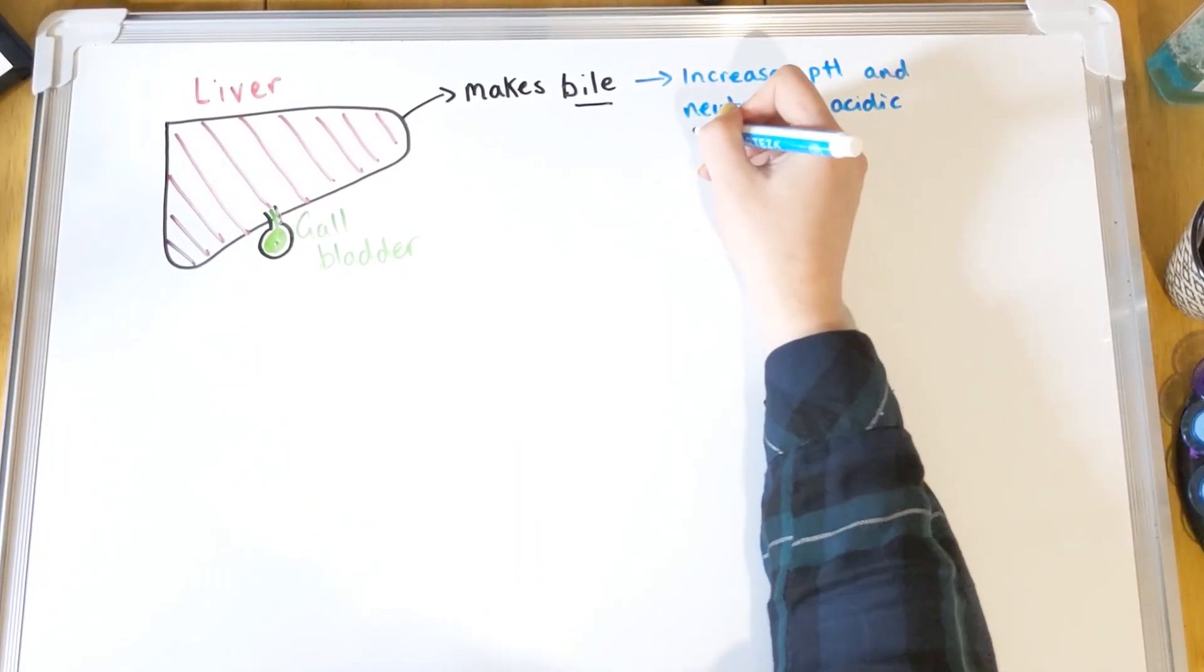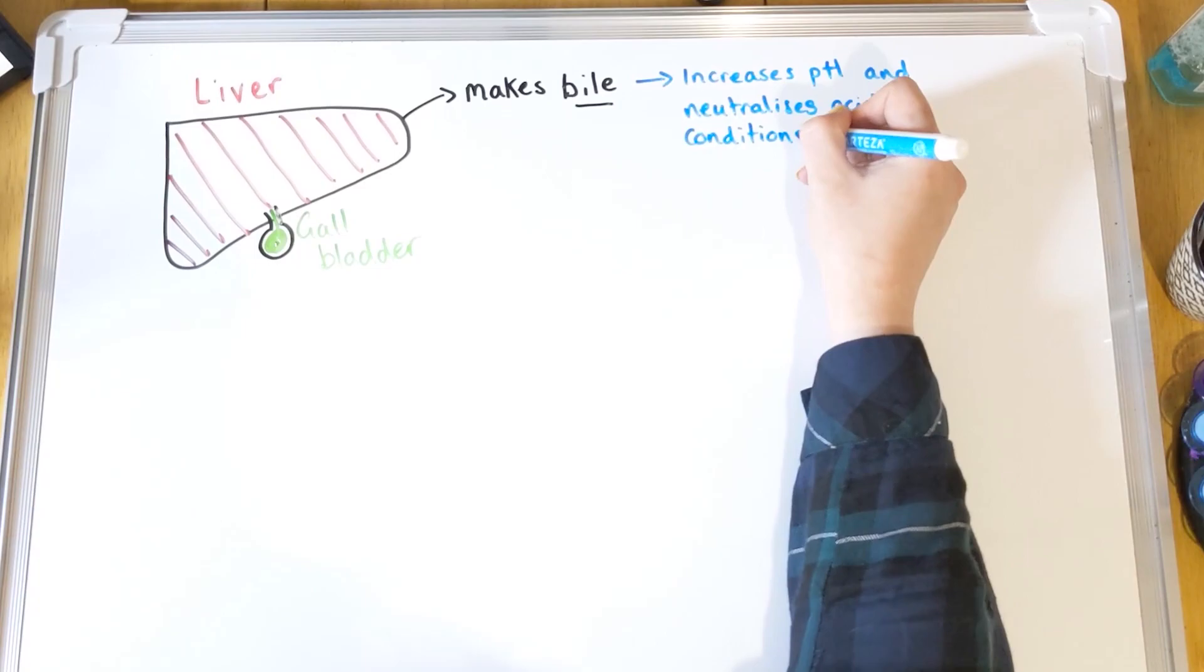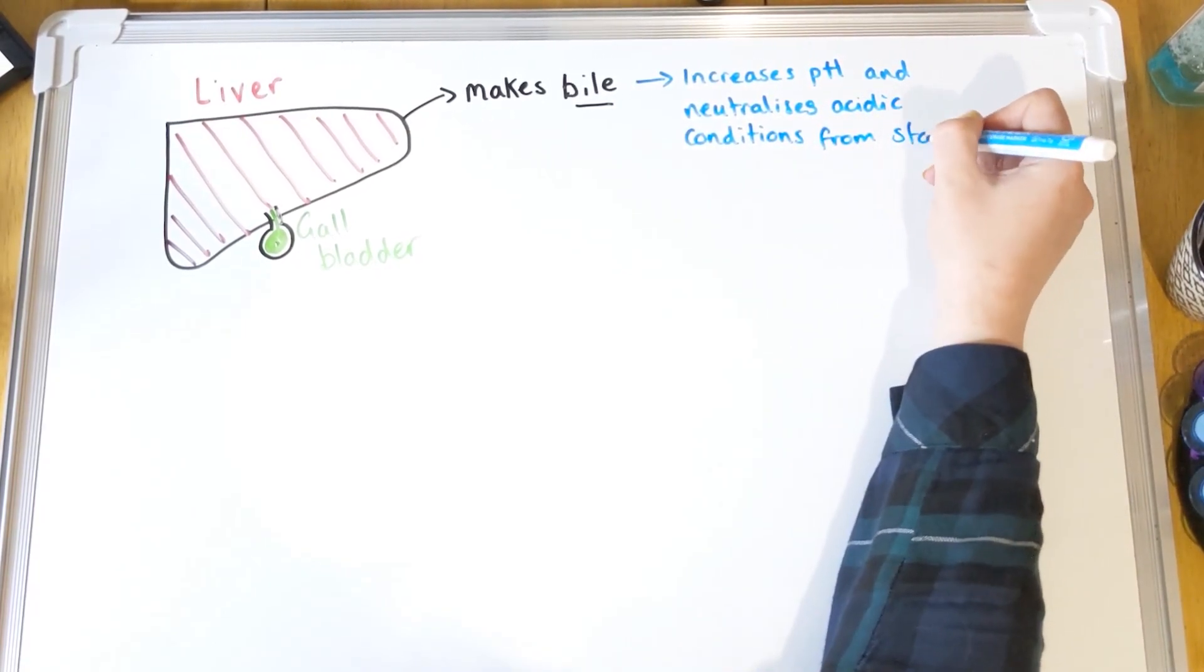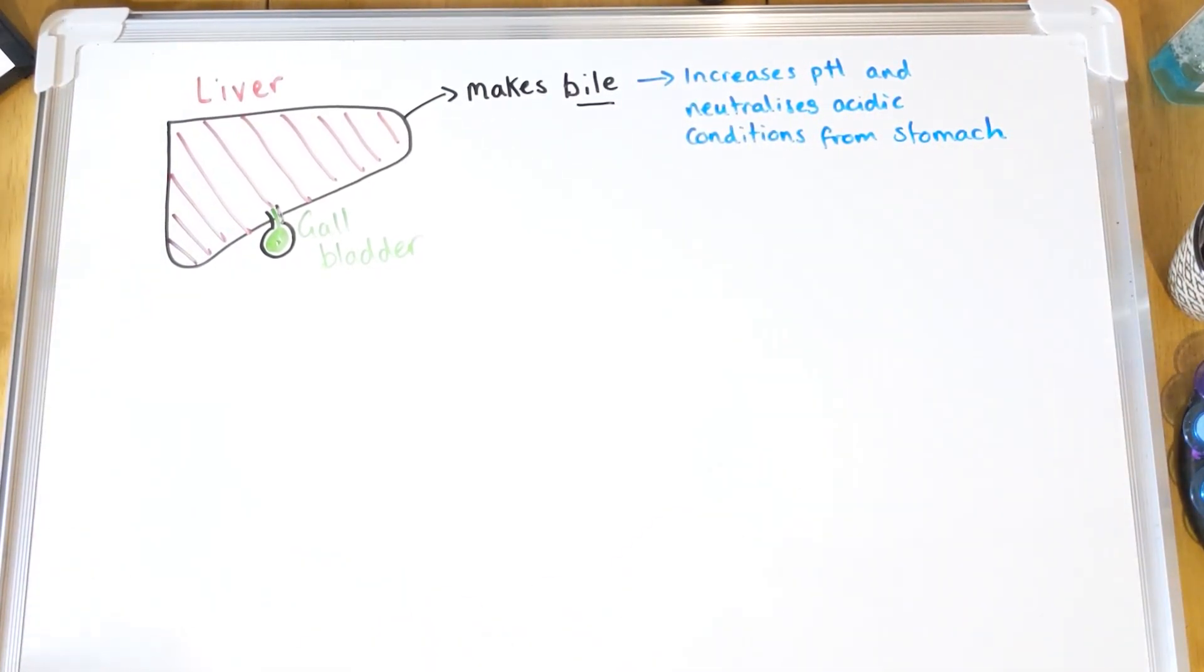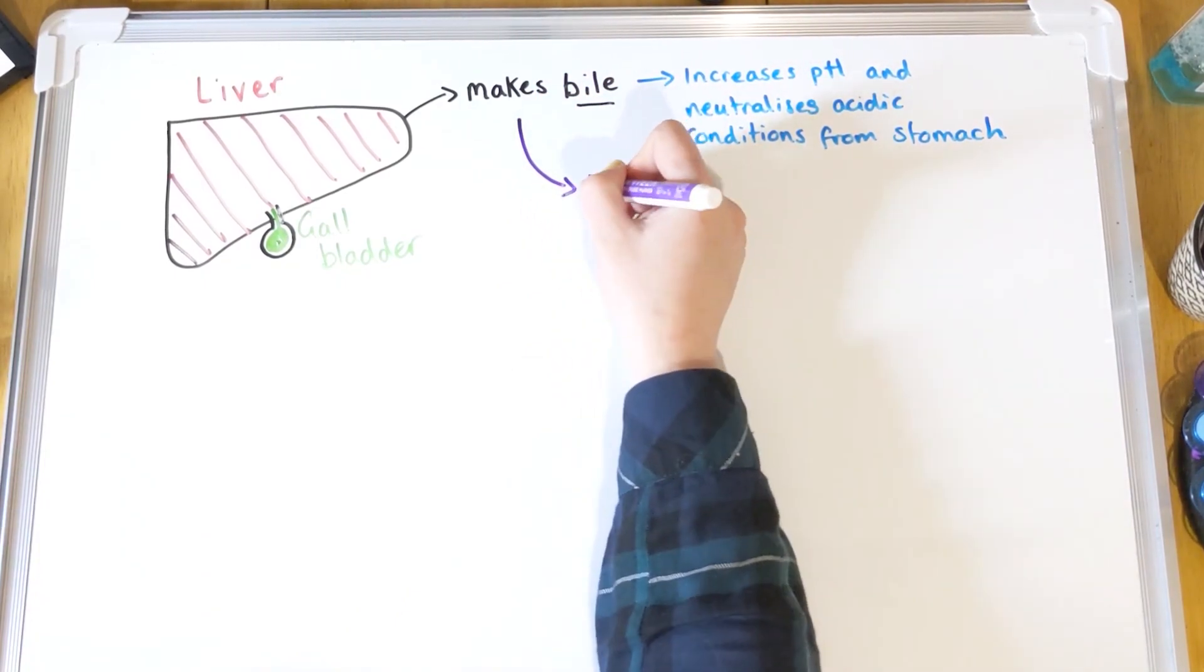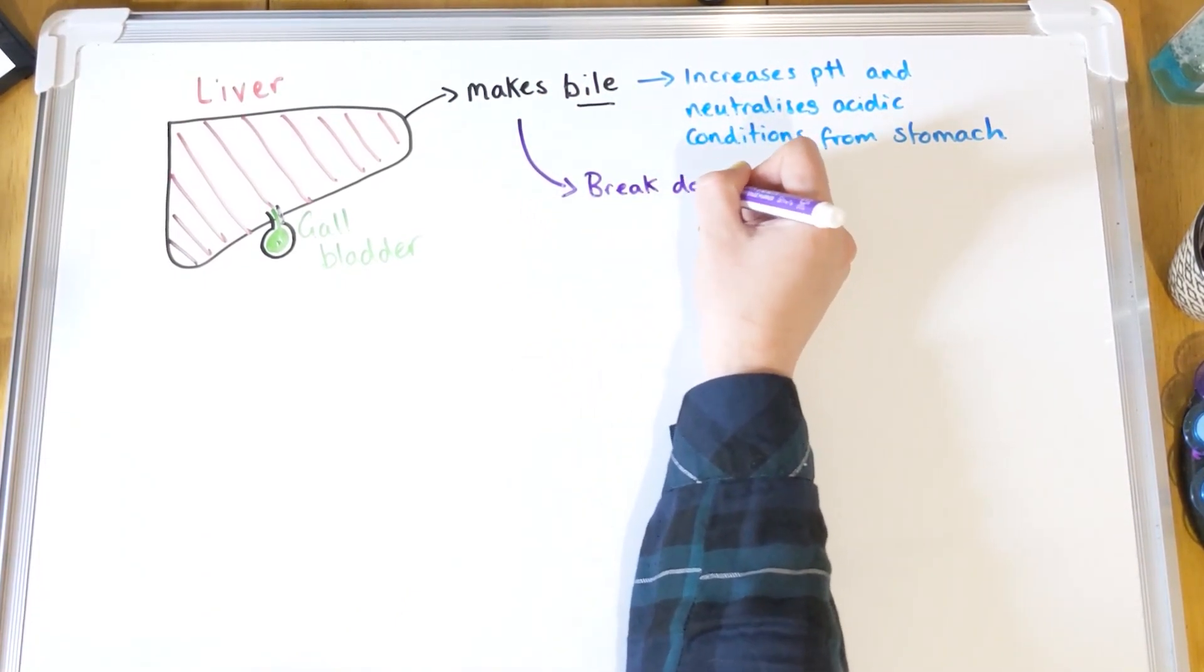So what bile does is it increases the pH, makes conditions nice and alkaline in your small intestine, and it neutralizes any stomach acid that is brought in with that food once it moves from the stomach to the intestine.